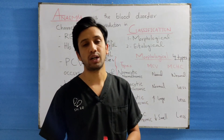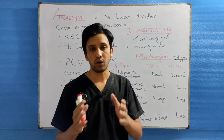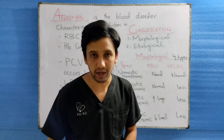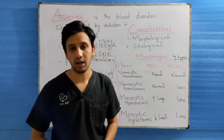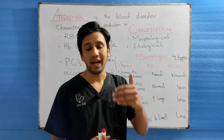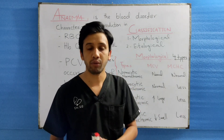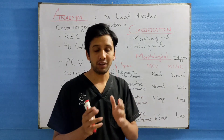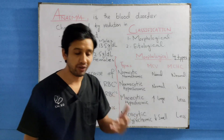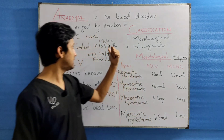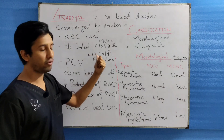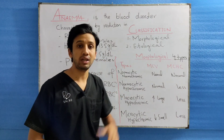Hello guys, this is Dr. Kashan Kasid, and we are going to discuss today the topic of the blood disorder which is anemia. Anemia is the condition characterized by reduction in the RBC count, HB level, and PCV which is Packed Cell Volume. Normally, the HB level ranges between 13.5 to 17.5 gram per deciliter in males, while in females it ranges between 12.5 to 16 gram per deciliter. When the HB is less than 13.5 in males or less than 12.5 in females, the person is said to be anemic.